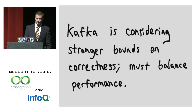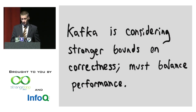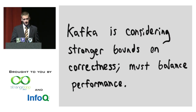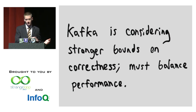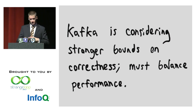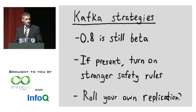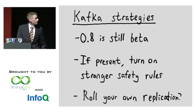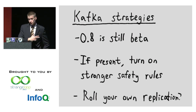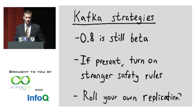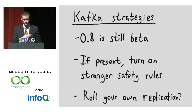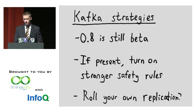The Kafka team at LinkedIn are really smart people dealing with incredible constraints and scale, balancing strong correctness with performance. Since replication is still beta, expect changes — my information is probably already two weeks out of date. If present, turn on any stronger safety rules for Kafka consistency. You might want to roll your own replication if this doesn't provide satisfactory properties. The engineers are smart; they're going to get it right.